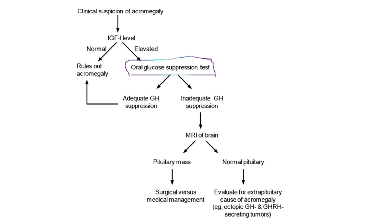Diagnosing acromegaly involves evaluating IGF-1 levels and conducting oral glucose suppression tests. If growth hormone suppression is inadequate, an MRI of the brain is performed to check for pituitary masses. Depending on the findings, surgical versus medical management is considered, or evaluation for extrapituitary causes of acromegaly.